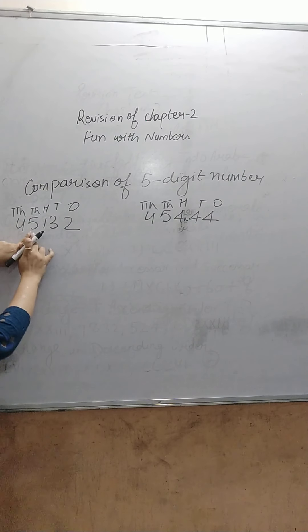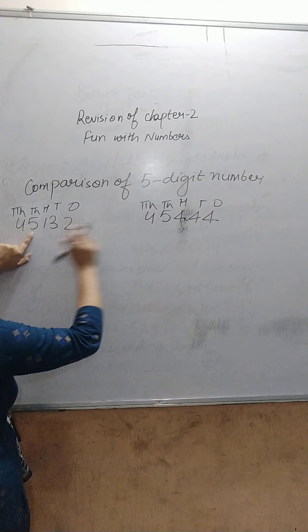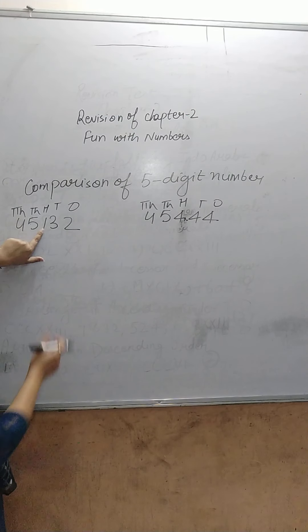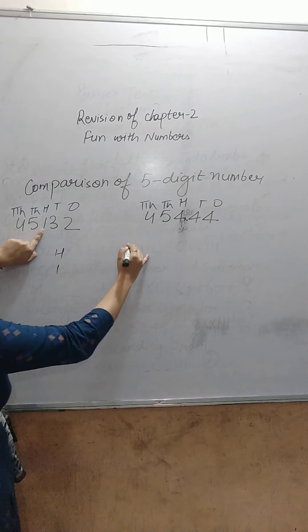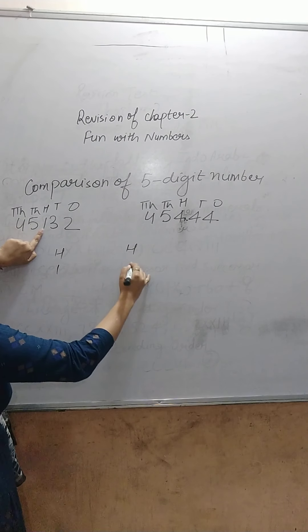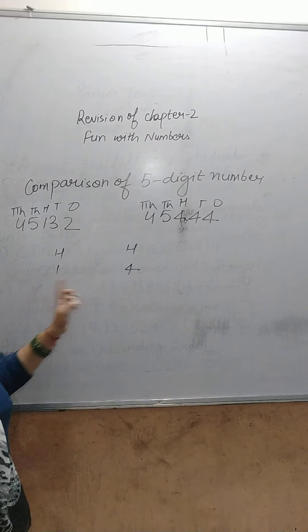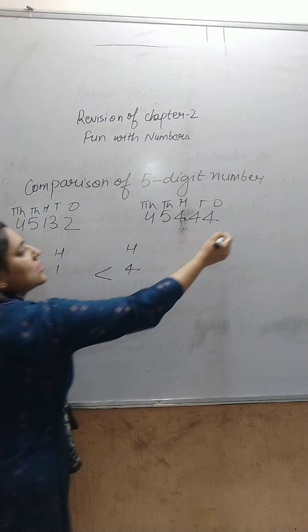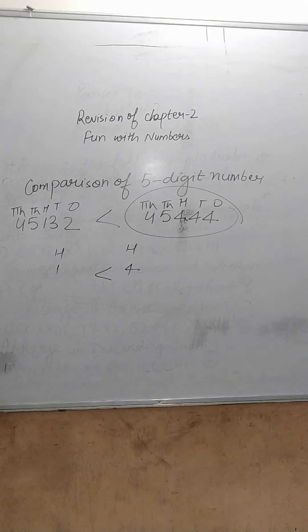In the 1,000 place, there is 5 in the first number and also 4 in the second. Then go to the 100's place: there is 1 in the first number and 4 in the second. 4 is greater than 1, so the whole second number 45,444 is greater than 45,132.